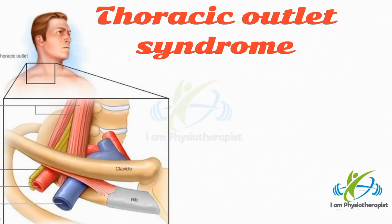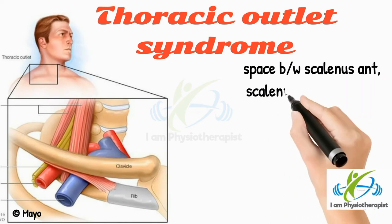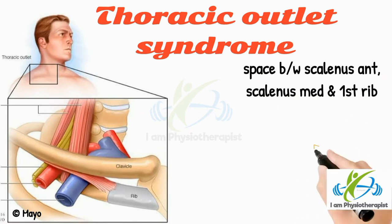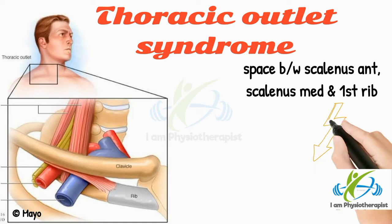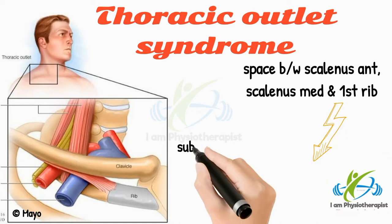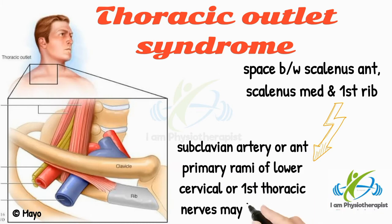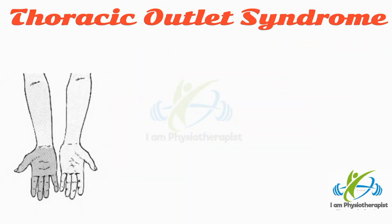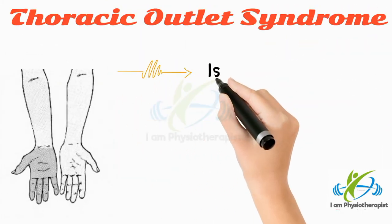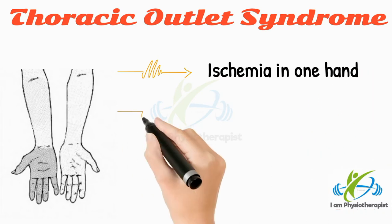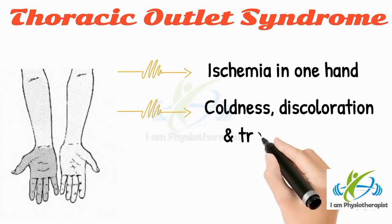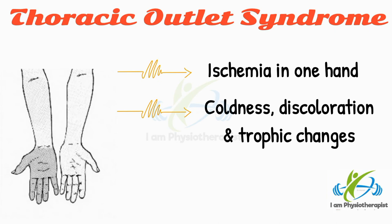Thoracic outlet syndrome may result from involvement of the space between the scalenus anterior, scalenus medius, and the first rib, so that the subclavian artery or anterior primary rami of the lower cervical or first thoracic nerves may be affected. Begin by looking for evidence of ischemia in one hand — check for coldness, discoloration, and trophic changes.